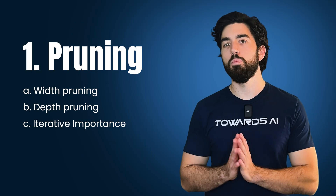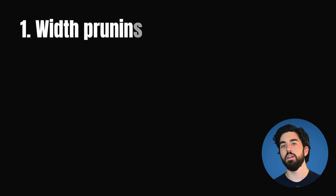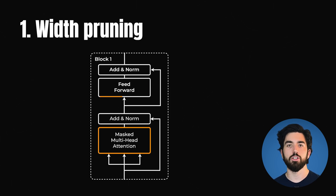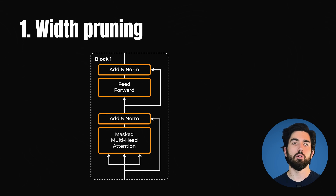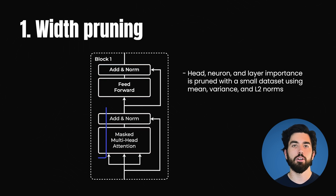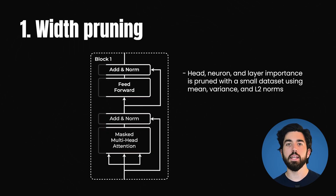Now back to pruning and the three key methods. Width pruning focuses on evaluating multi-head attention, multi-layer perceptron, and layer-norm layers. A small dataset helps assess the importance of each head, neuron, and layer, with mean, variance, and L2 norms being calculated to guide pruning.